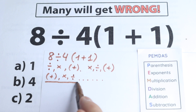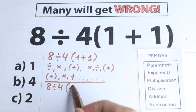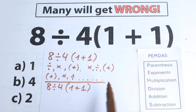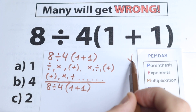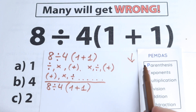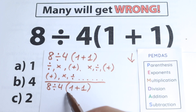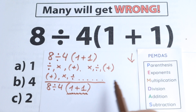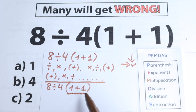So let's do this. I'll rewrite the question: 8 divided by 4, and in parentheses we have 1 plus 1. Looking at PEMDAS from top to bottom, the first step is parentheses. We have parentheses on the right-hand side, so we start there: 1 plus 1 equals 2.